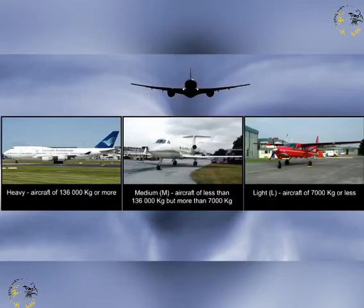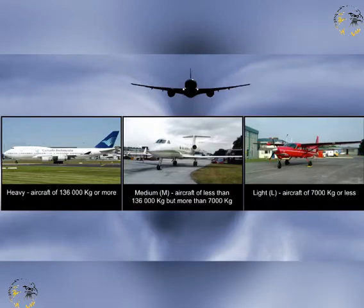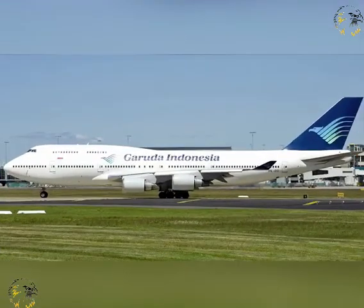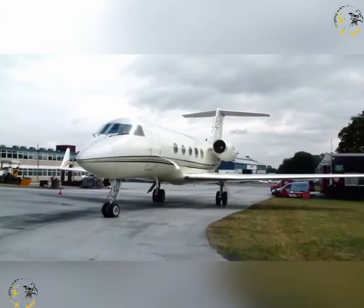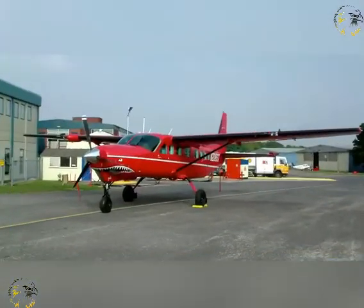Since the severity of wake turbulence is a factor of mass, ICAO grouped all aircraft by type and devised three wake turbulence categories according to the maximum certified take-off mass of the aircraft concerned. The categories are: heavy aircraft of 136,000 kg or more; medium aircraft of less than 136,000 kg but more than 7,000 kg; and light aircraft of 7,000 kg or less.